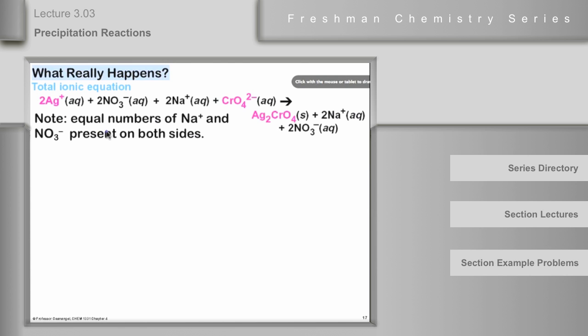Now, we recognize here that the nitrate ions, the two nitrate ions and the two sodium ions, on the left side of the equation, are exactly the same as the two sodium ions and two nitrate ions that are on the right side. No change occurred. And because of that, we call those ions that don't undergo any change spectator ions. They are not involved in the chemical change. They are merely spectators to the whole thing.